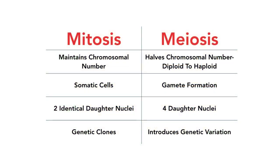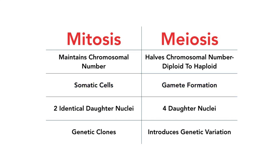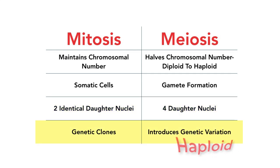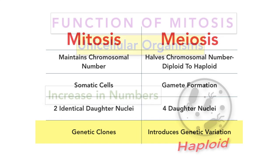It's a good idea to compare mitosis with meiosis, the other form of nuclear division. Mitosis maintains chromosomal number whereas meiosis halves it — diploid to haploid — for gamete formation. Mitosis involves somatic cells whereas meiosis is involved in gamete formation. Mitosis produces two identical daughter nuclei whereas meiosis produces four non-identical daughter nuclei. Mitosis produces genetic clones whereas meiosis introduces genetic variation.